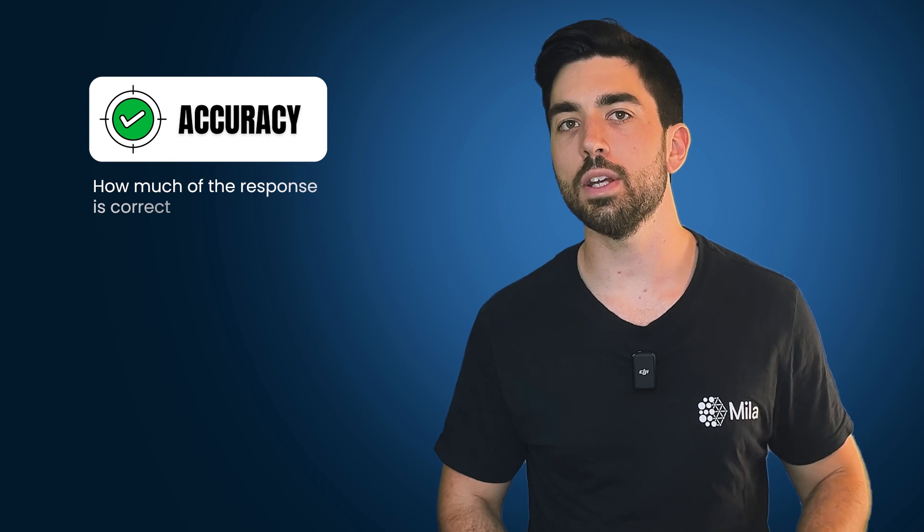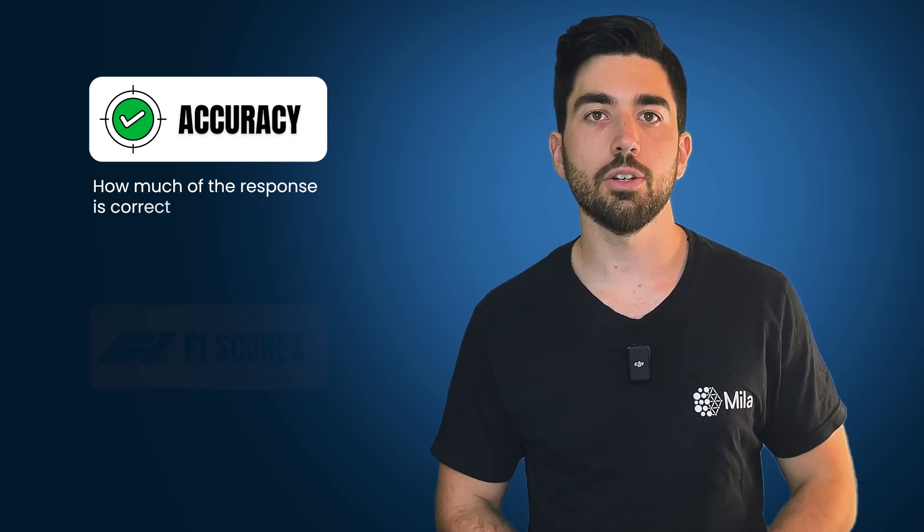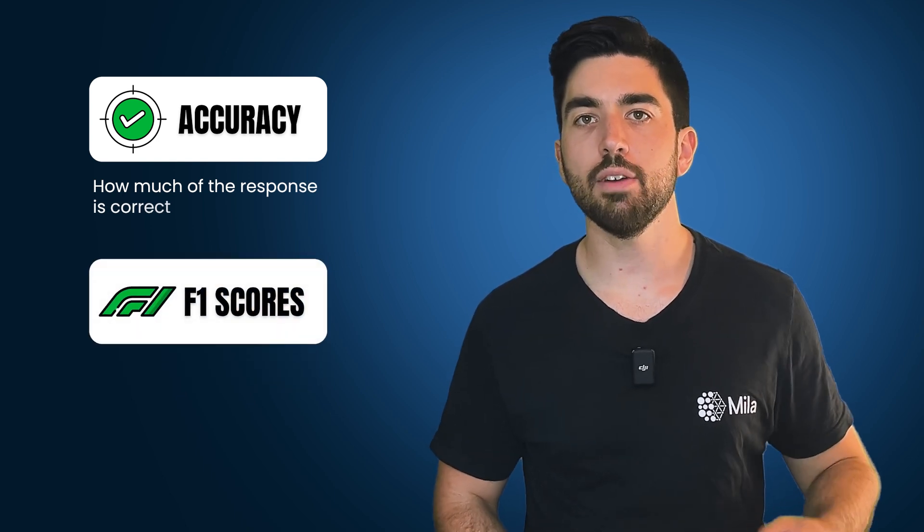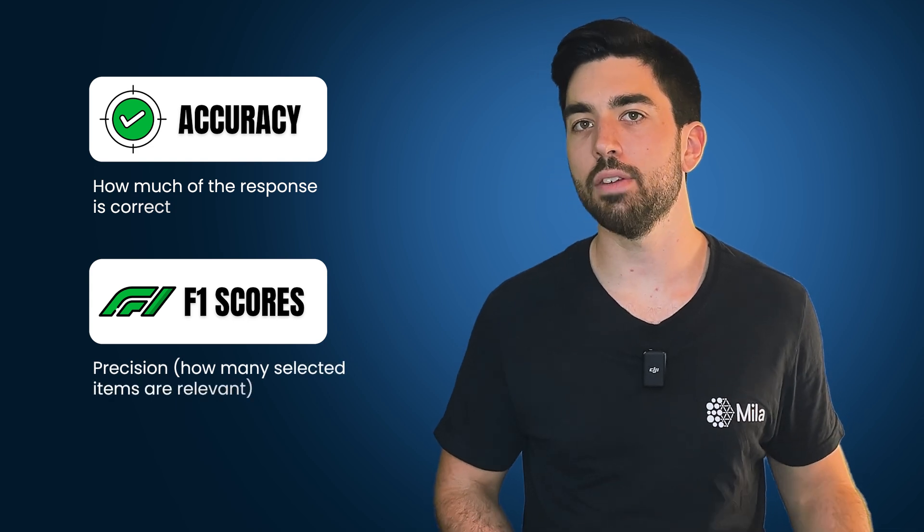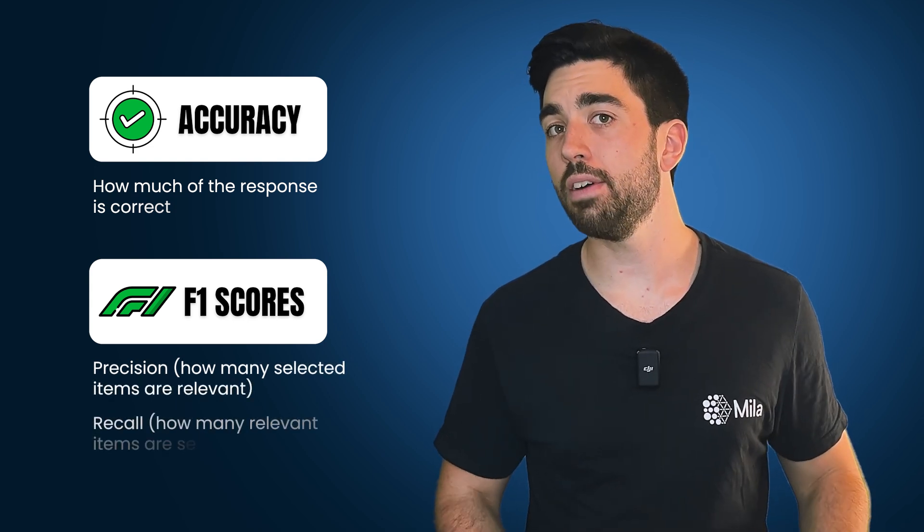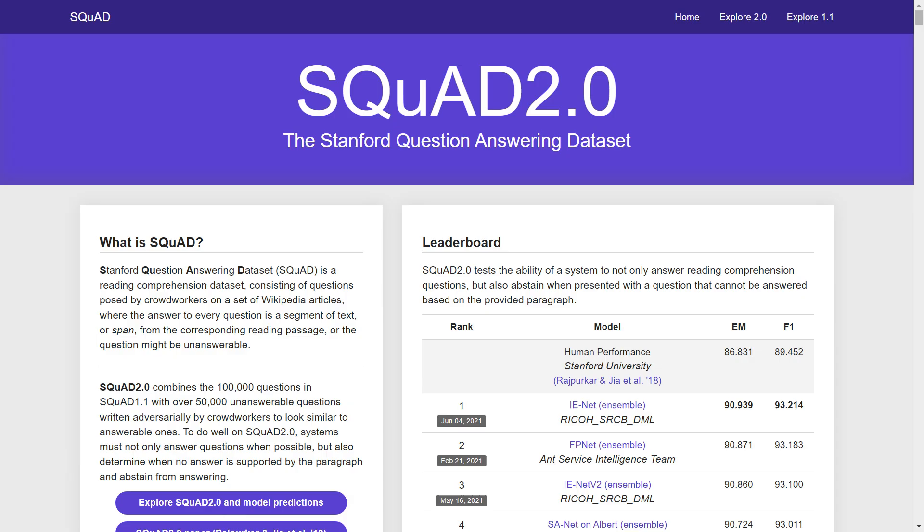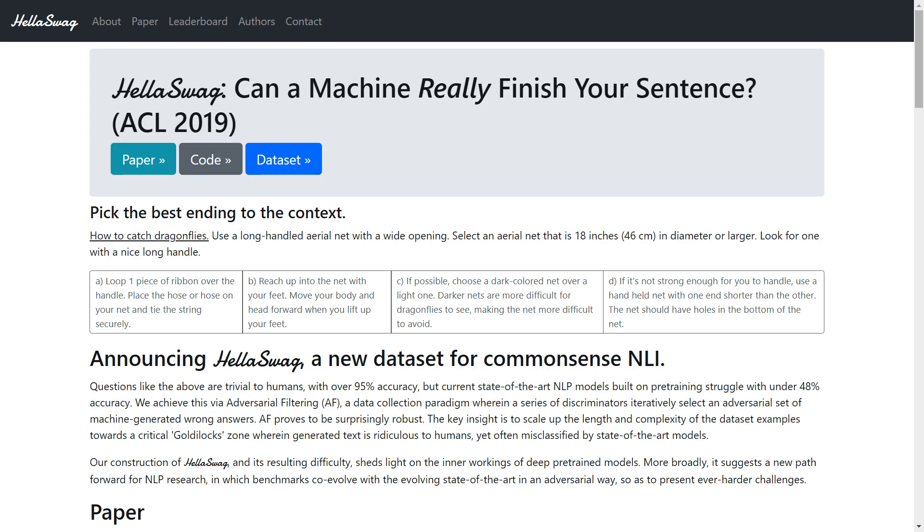This method uses key metrics such as accuracy and calibration. Accuracy measures how much of the response is correct. Beyond just accuracy, there are traditional metrics like F1 scores, which balances precision, how many selected items are relevant, and recall, how many relevant items are selected, used in benchmarks like Squad, Hellaswag, and Truthful QA.